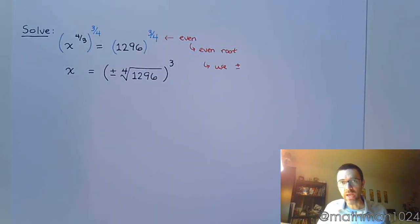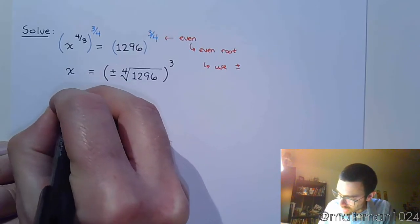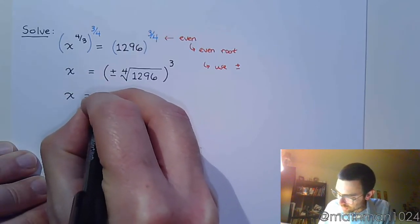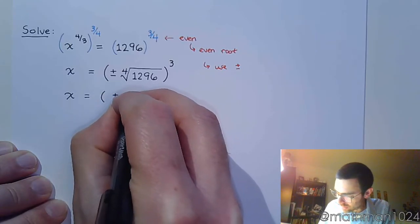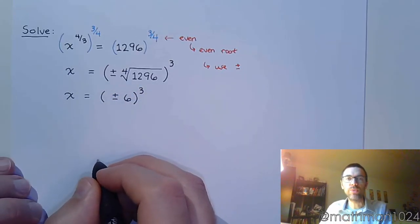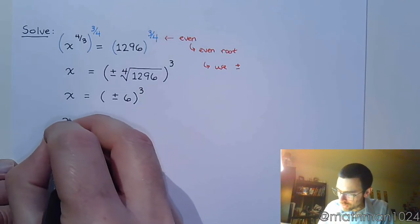Now if you've got your list of powers that we had on a previous document, this is a fairly simple problem. You just go down that list of powers of four until you come across one that says 1296, and you're gonna find out the fourth root of this is six. And now we've got six cubed.